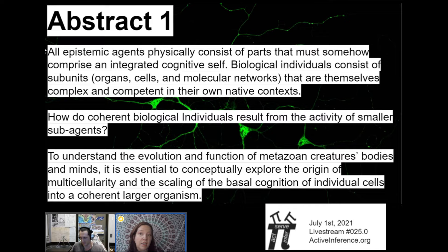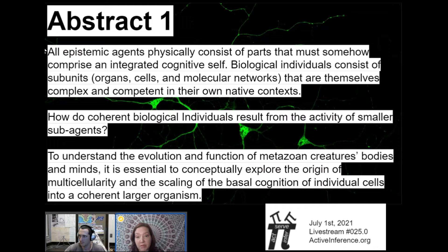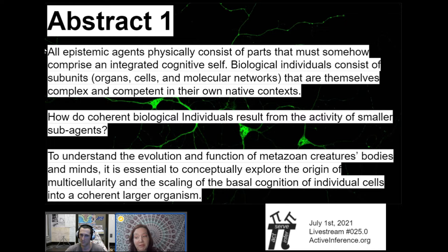So all epistemic agents physically consist of parts that must somehow comprise an integrated cognitive self. Biological individuals consist of subunits — organs, cells and molecular networks — that are themselves complex and competent in their own native contexts. How do coherent biological individuals result from the activity of smaller subagents? To understand the evolution and function of metazoan creatures, bodies and minds, it is essential to conceptually explore the origin of multicellularity and the scaling of basal cognition of individual cells into a coherent larger organism. A burning question for me is how information is consolidated or prioritized across scales.